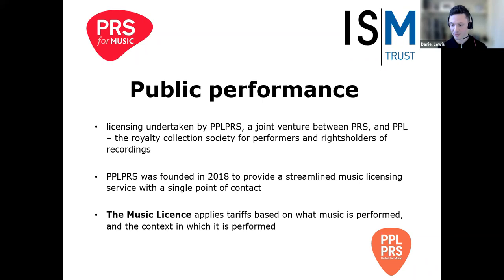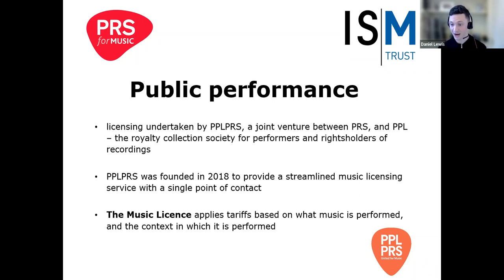The main product of PPL PRS is called the Music License. Organizations or premises that publicly perform music will need to take out such a license to ensure that composers and songwriters are remunerated for their work, as per their legal right under the Copyright Designs and Patents Act. The Music License applies a variety of tariffs based on what music is performed and the context in which it is performed. A full list of tariffs is available on the PPL PRS website at pplprs.co.uk, but I'll discuss some of the main tariffs related to public performance in this presentation.